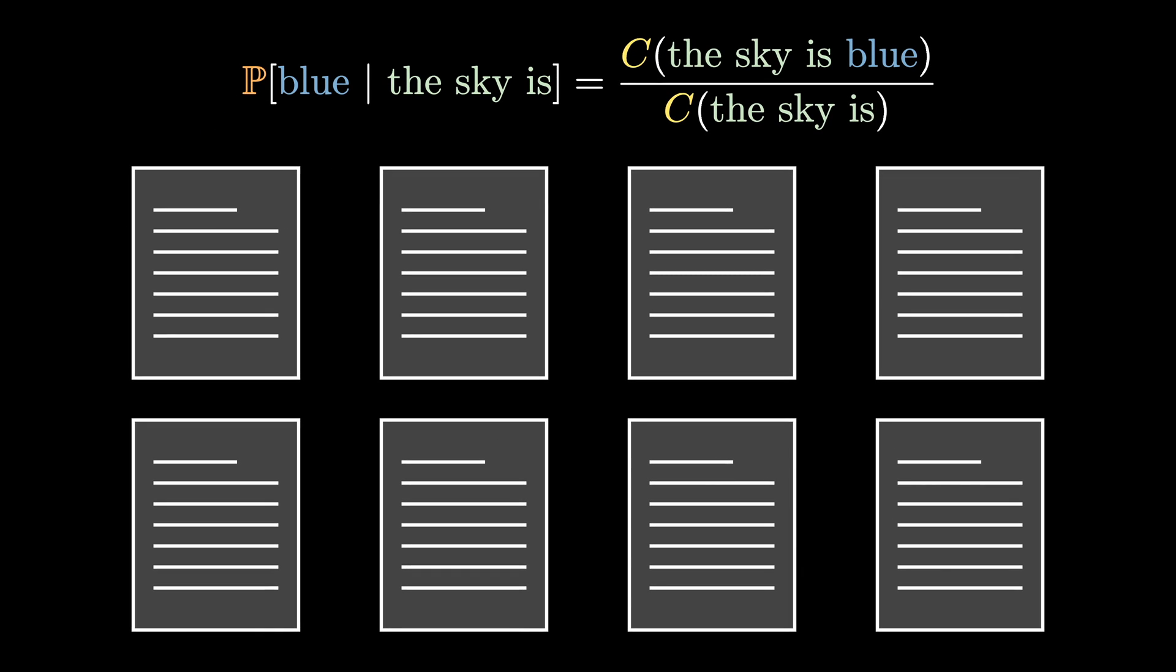lot of text - say, all the Wikipedia articles. Then, in order to compute the probability that blue comes after "the sky is," we look for every occurrence of "the sky is" and count how many times blue occurred after it. Some of you could see some problems here. You know, what if "the sky is" never occurs?